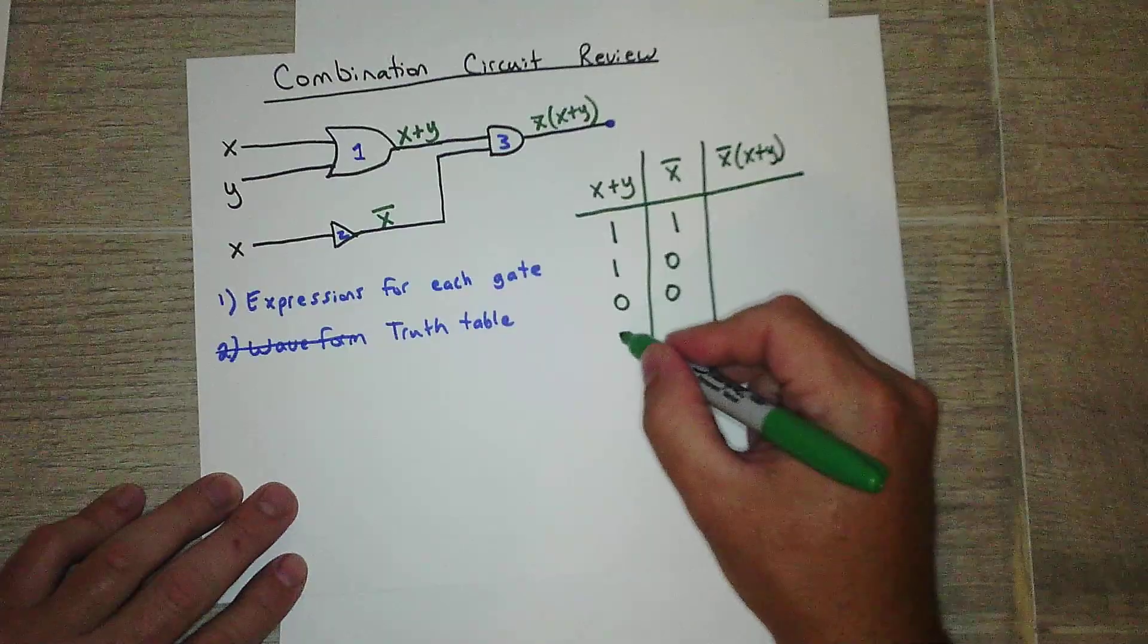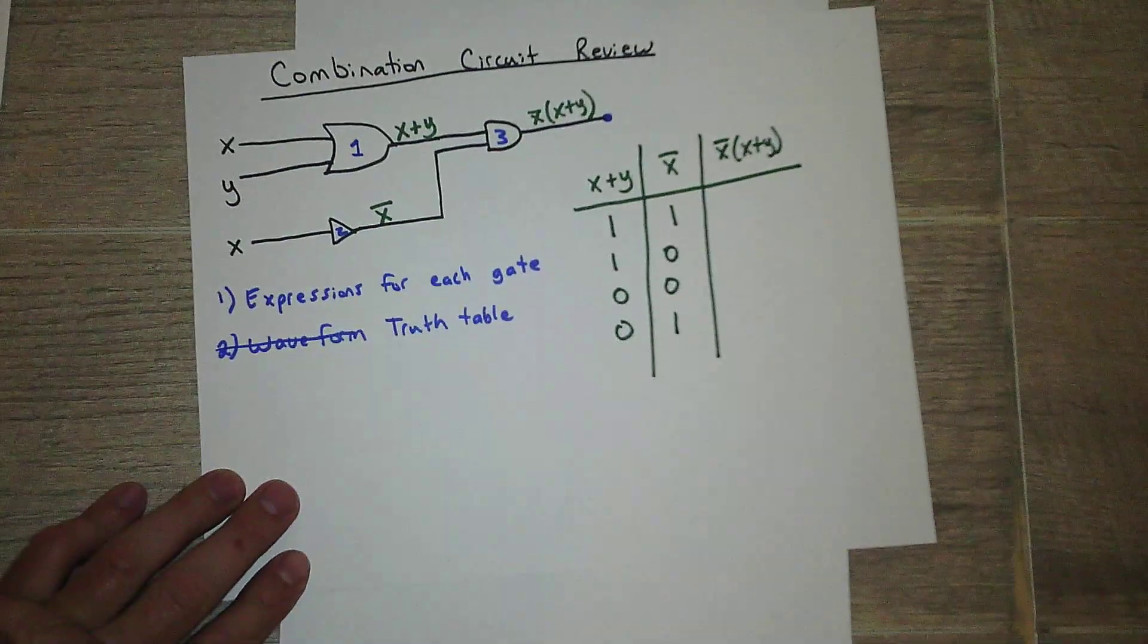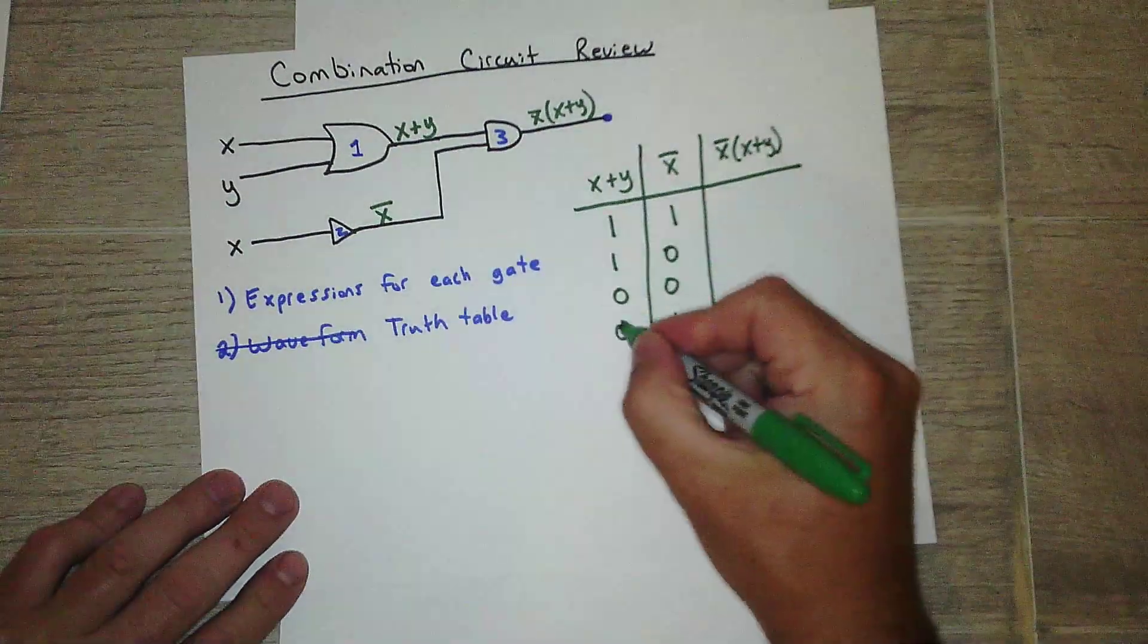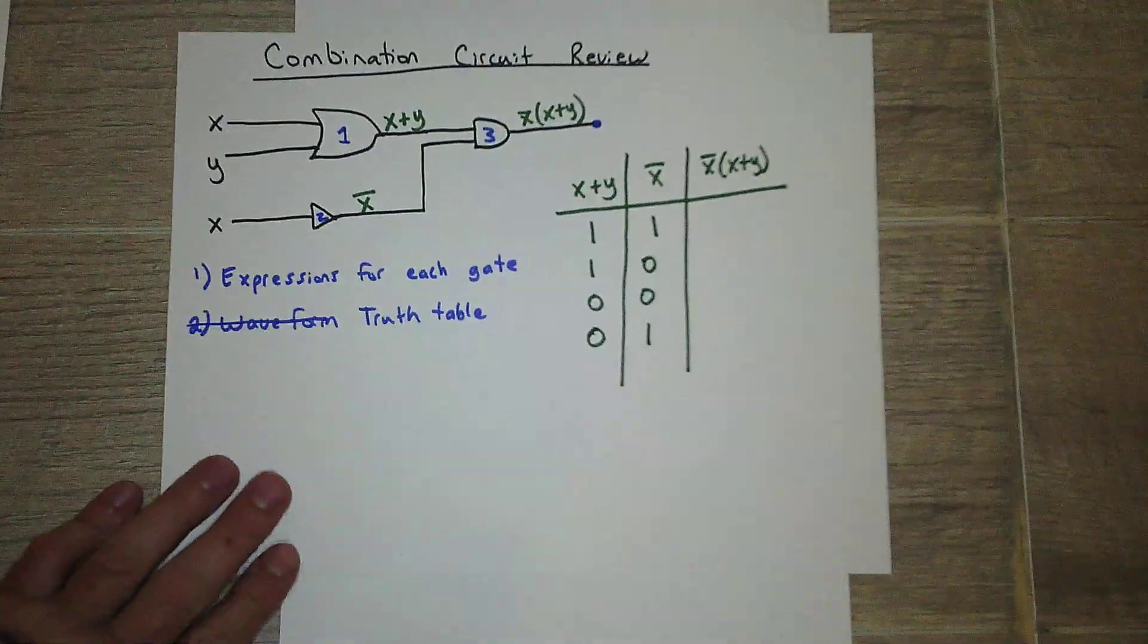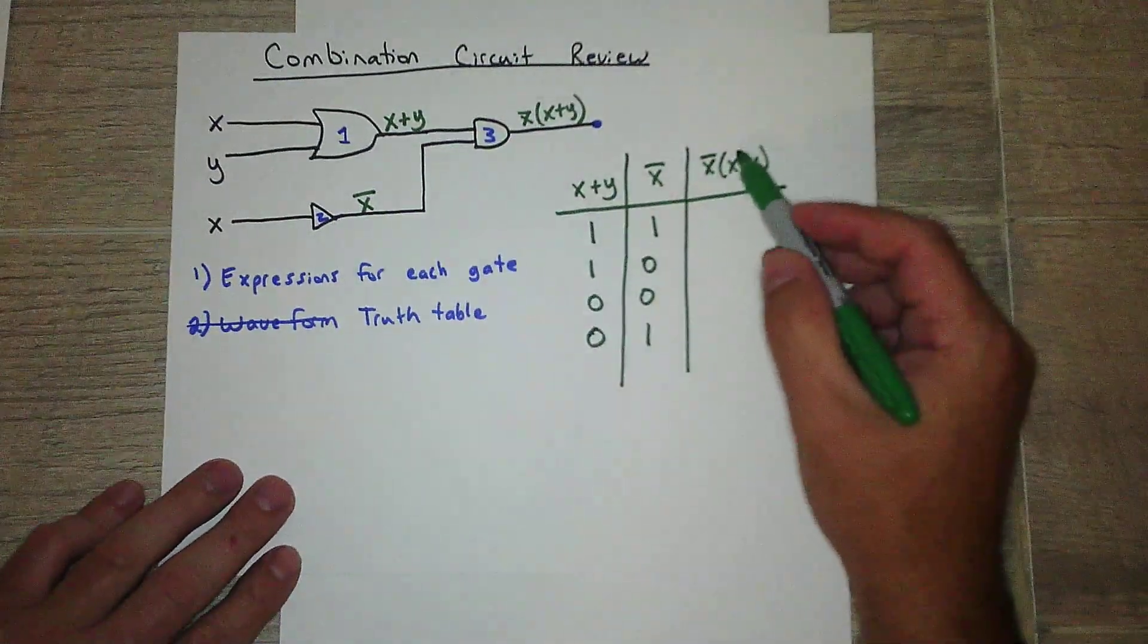Zero, zero. Zero, one. Okay, so that's all the combinations we have. So when is this going to be on? So think about this.